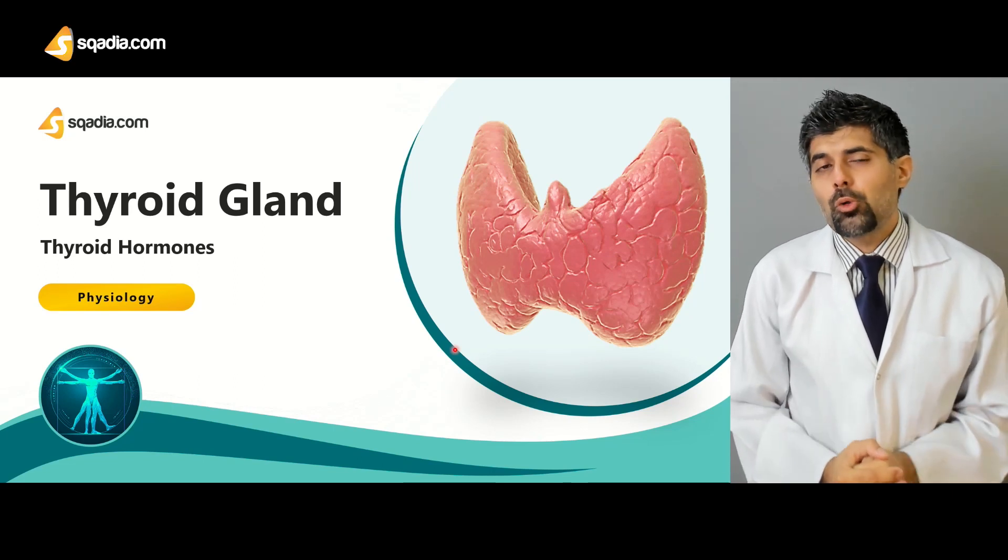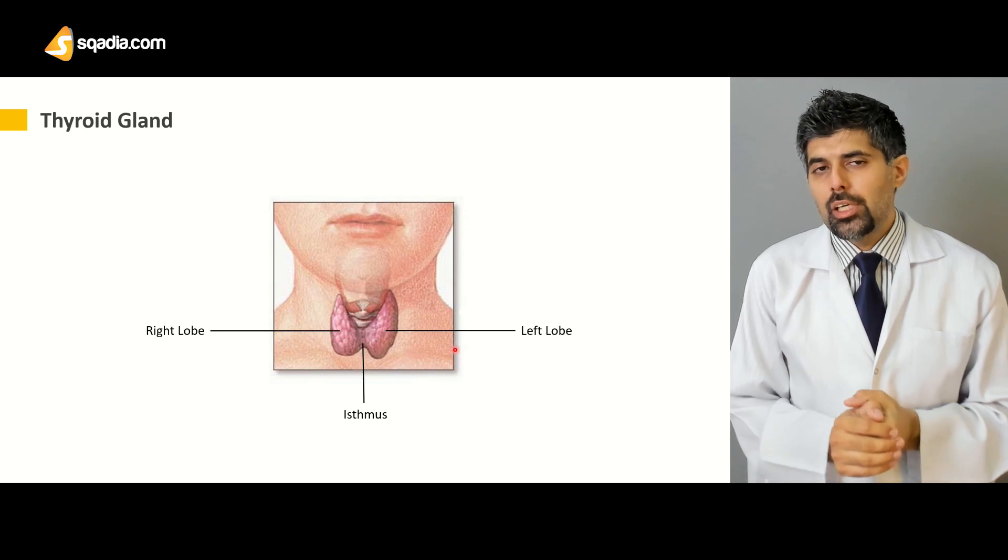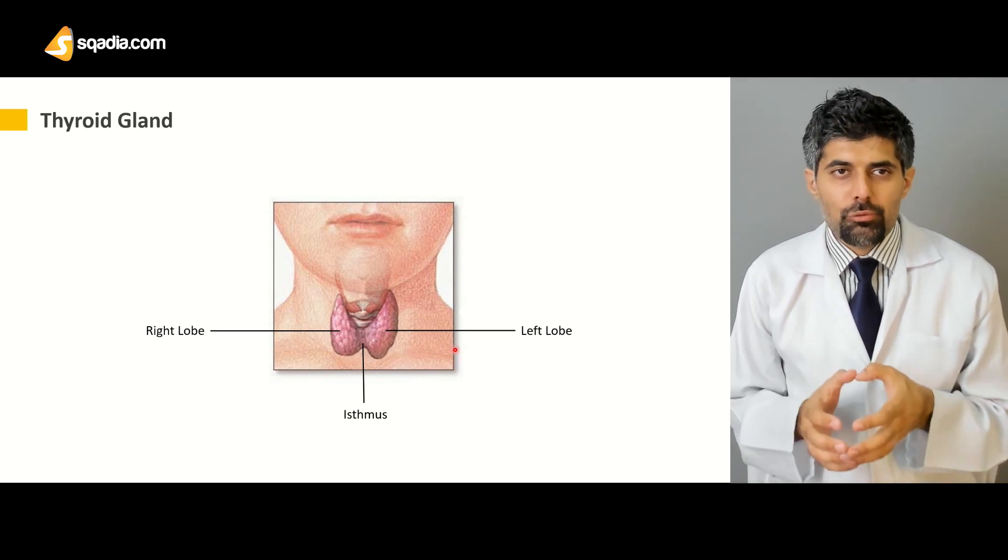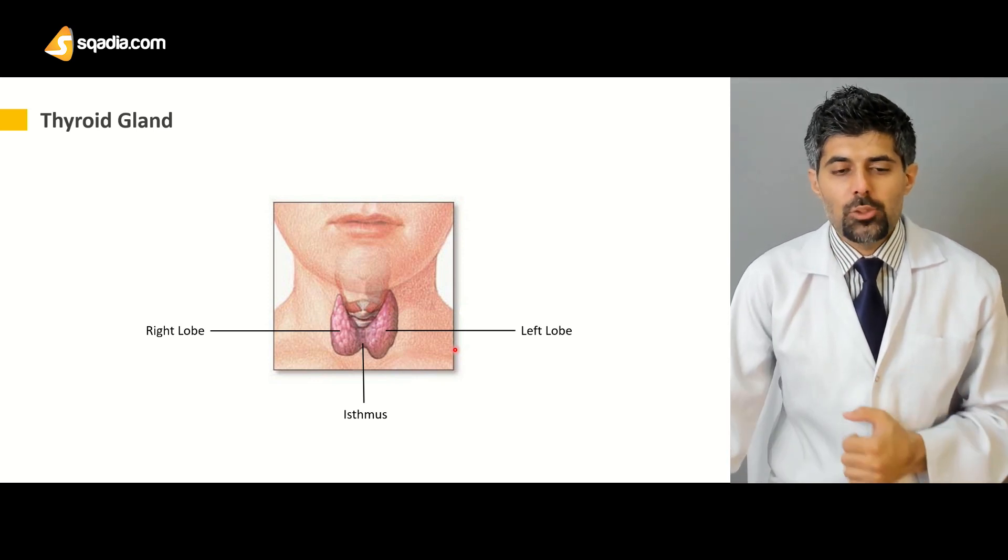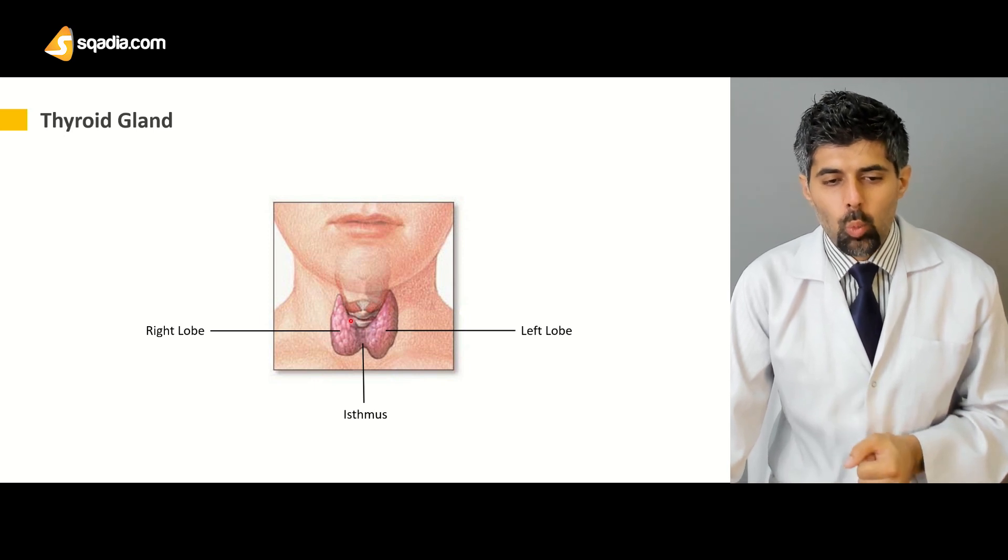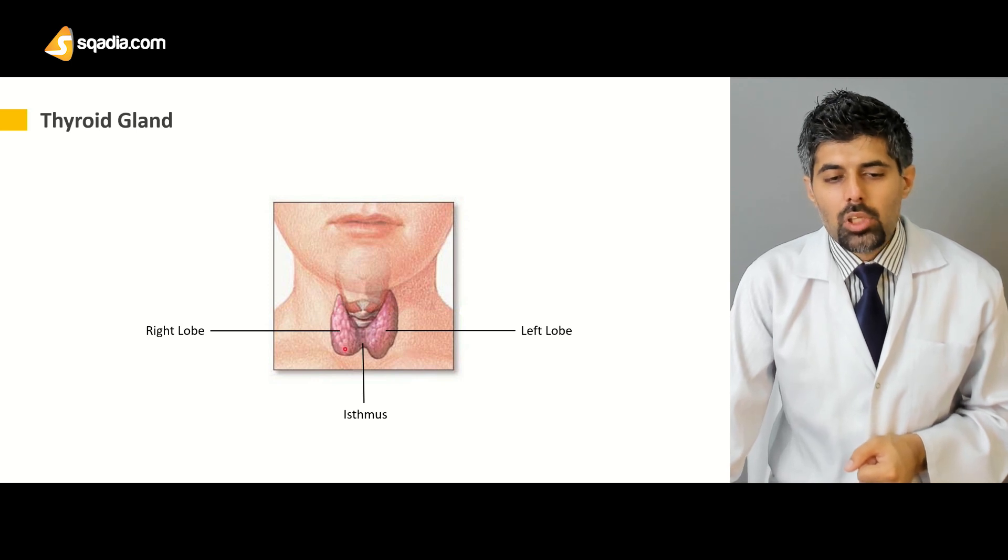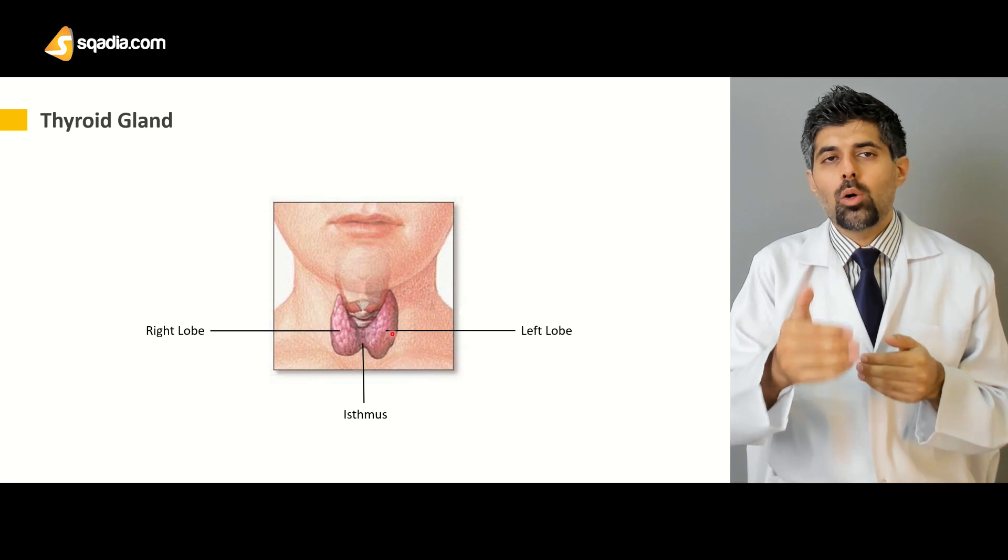Let's talk about the thyroid gland. As I mentioned earlier, thyroid gland is an endocrine gland which is found at the anterior part of the neck. As you can easily see here, this is the neck area while this is the thyroid gland. The thyroid gland is at the anterior most part of the neck.